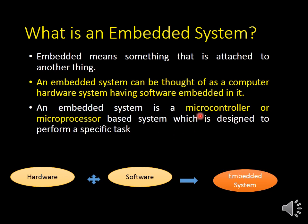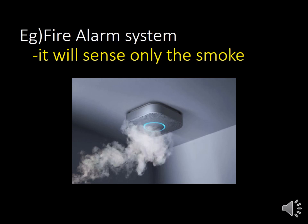If you are using a microcontroller, it is called a microcontroller-based system. If you are using a microprocessor, it is called a microprocessor-based system. An embedded system is used to perform a specific task — for a specific application or to perform a specific task, we go for an embedded system. Our best example is a fire alarm system, which senses the smoke from fire and gives an alarm as output. It will sense only the smoke, so it is designed for a specific task.